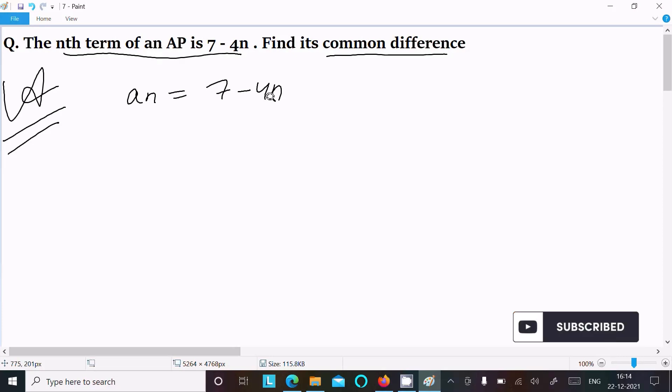Now we can easily here get first term, second term, third term. So if I put here n value 1, this comes 7 minus 4 into 1. If you calculate, the value comes 3. Now second term we can calculate: 7 minus 4 into 2. So here 4 into 2 is 8, 7 minus 8, the value comes minus 1.